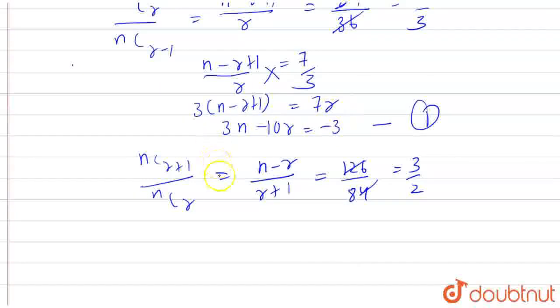On cross-multiplication, we will get 2N minus 2R is equal to 3R plus 3. Now, 2N minus 5R is equal to 3. That is the second equation.